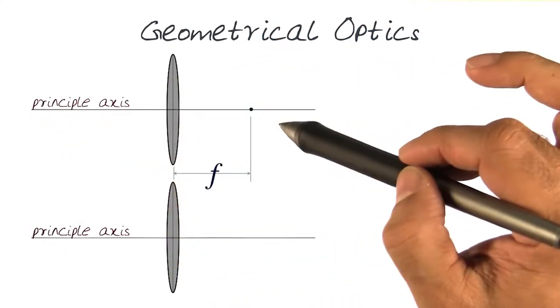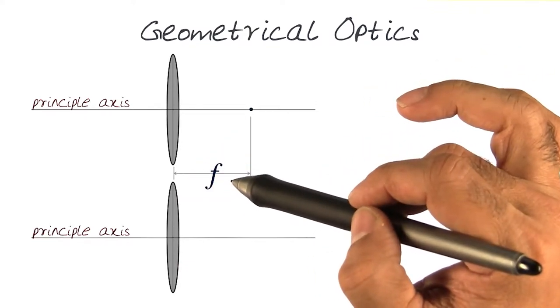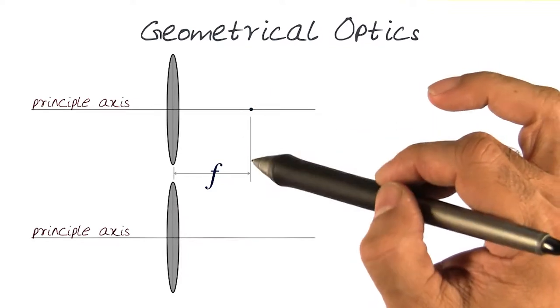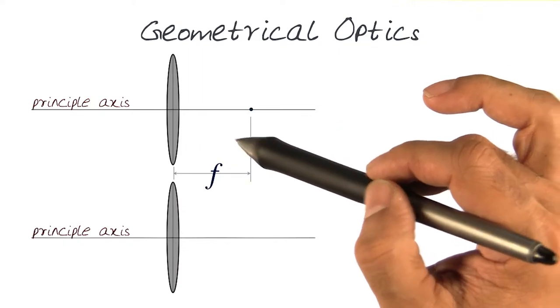This is the principal axis, and this point here is also the focal length. If you remember the whole concept of the pinhole, that's where we wanted the image to be formed in the camera obscura pinhole camera.